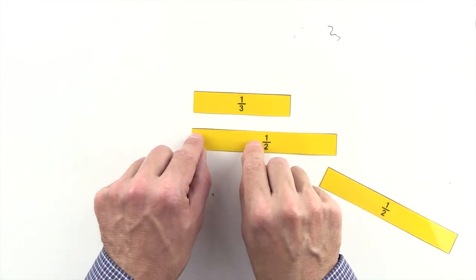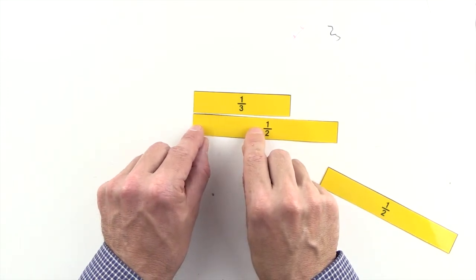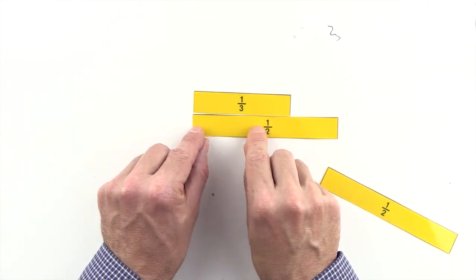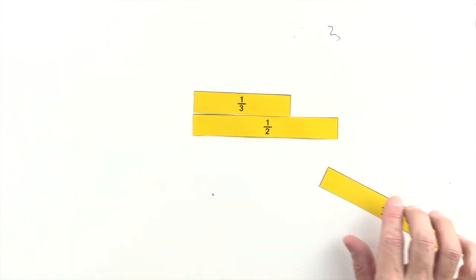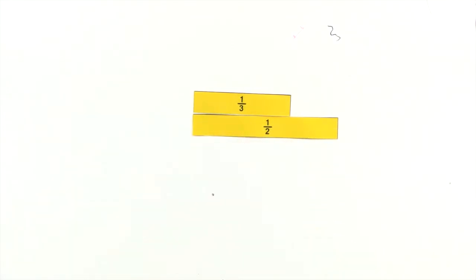1 half is greater than 1 third, so we can't make an equivalent fraction to 1 third out of halves.